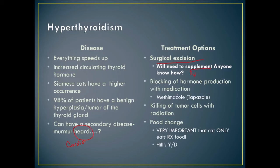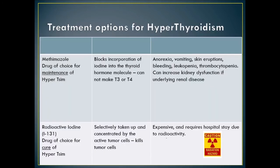Methimazole is the drug of choice for maintenance of hyperthyroidism. It blocks the incorporation of iodide into the thyroid molecule so thyroid hormones cannot be made. Side effects include anorexia, vomiting, skin eruptions, bleeding, leukopenia, thrombocytopenia, and increased kidney dysfunction in animals with underlying renal disease. Radioactive iodine is the drug of choice for the cure of hyperthyroidism — it is selectively taken up by active tumor cells to destroy them, but it is expensive and requires a hospital stay.